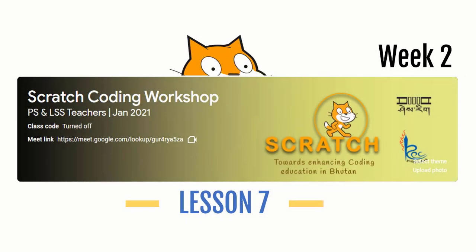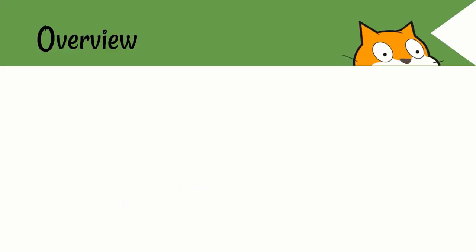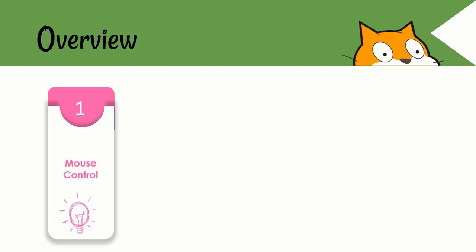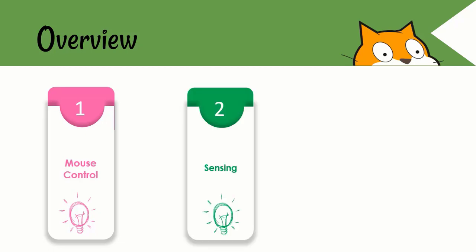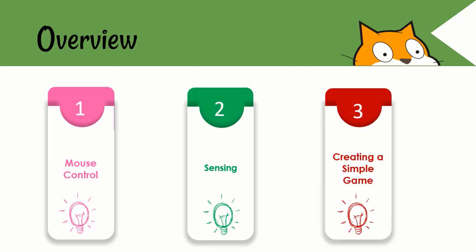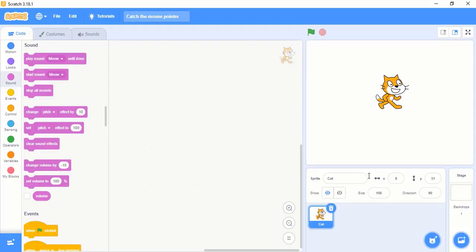Hello everyone, welcome to lesson 7. In this lesson, firstly we will learn about mouse control and then sensing, and based on these two blocks we will create a simple game that is Tom and Jerry.